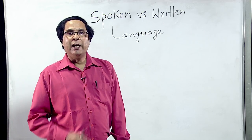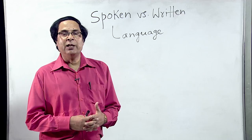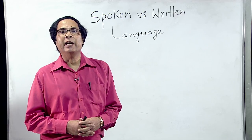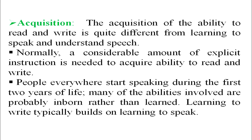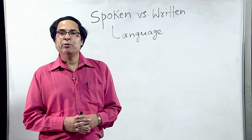The next difference is Acquisition. The acquisition of the ability to read and write is quite different from learning to speak and understand speech. Understanding and speaking a language happens naturally. For writing, we have to learn it at home or in school — a considerable amount of explicit instruction is needed. People everywhere start speaking during the first two years of life, and many abilities involved are probably inborn. Learning to write typically builds on learning to speak.